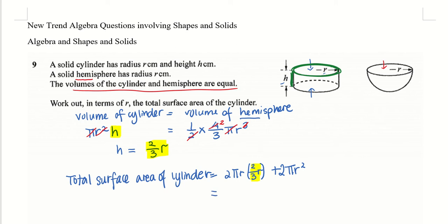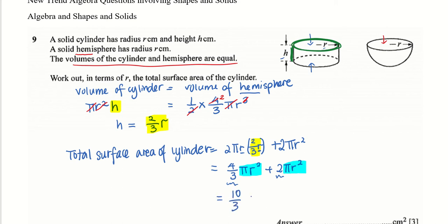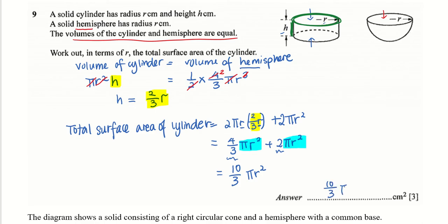We simplify: I have 2 pi r times 2/3 — that gives 4/3. Pi stays pi. r times r gives r squared. And the two circles give 2 pi r squared. So I have 4/3 pi r squared and 2 pi r squared — they have the same units. Adding 4/3 plus 2 gives 10/3. So the answer is 10/3 pi r squared.